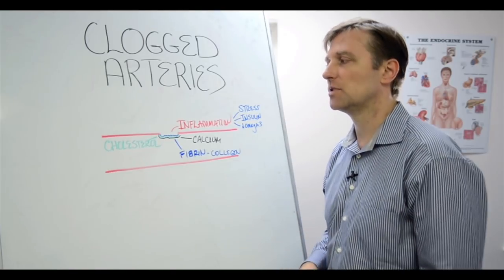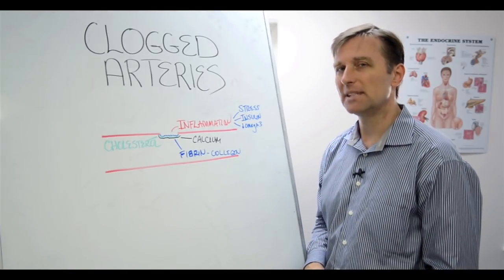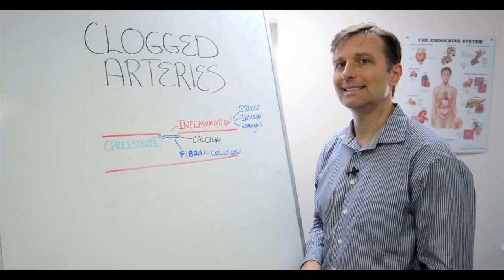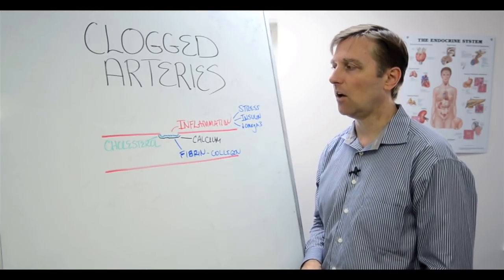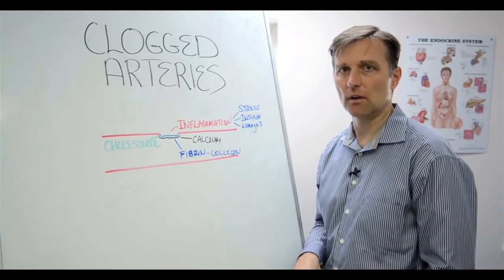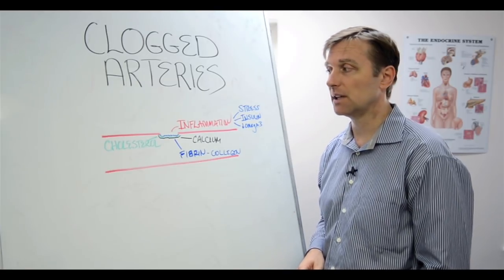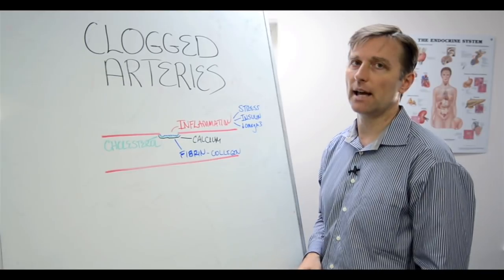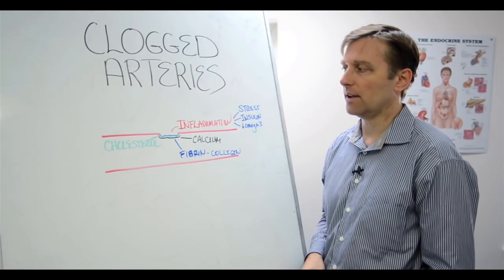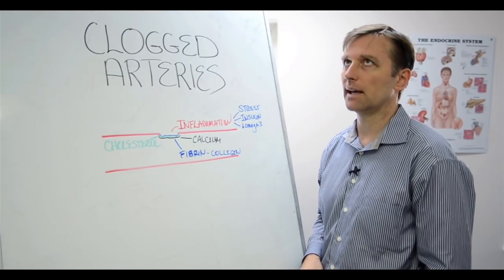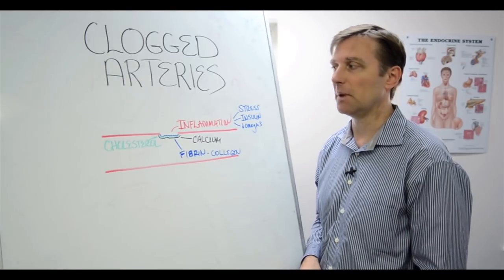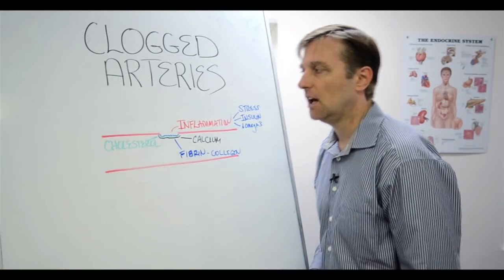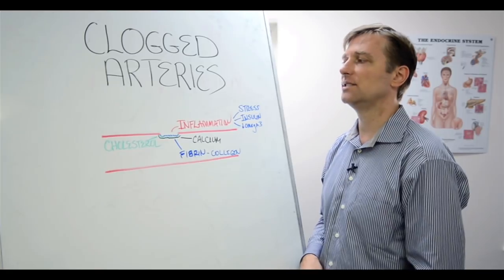I don't know if you knew this, but your body makes 2,000 milligrams of cholesterol every single day. Every cell wall is made from cholesterol. All your hormones, specifically sex hormones and others, are made from cholesterol. Your body makes a lot of it. One egg yolk is only 300 milligrams. Your body makes 3,000. If your body makes so much, why is it bad?